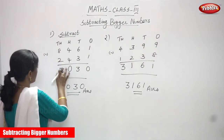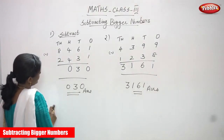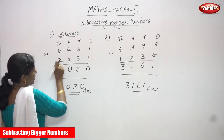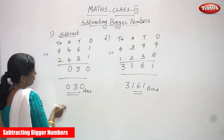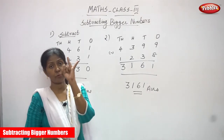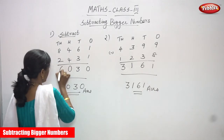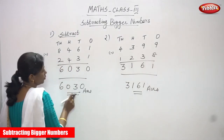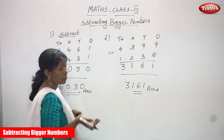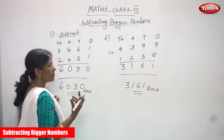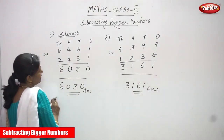Sorry, I wrote a wrong number earlier. Let me correct: 1 minus 1 is 0; 6 minus 3 is 3; 4 minus 4 is 0; 8 minus 2 — after 2, counting up to 8: 3, 4, 5, 6, 7, 8 — that means 6. So the correct answer is 6, 0, 3, 0. Don't make careless mistakes like me. Before you submit your paper to your teacher, you must recheck everything.